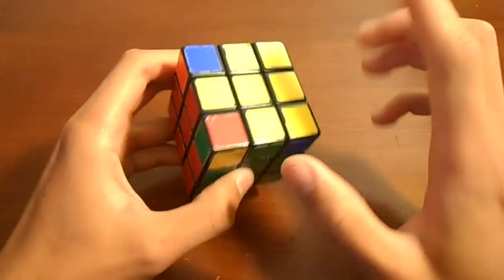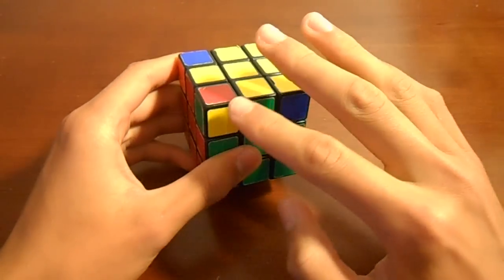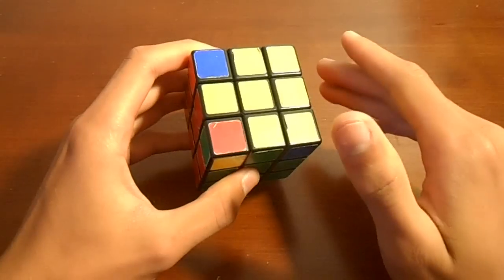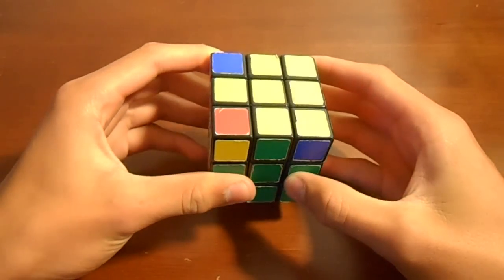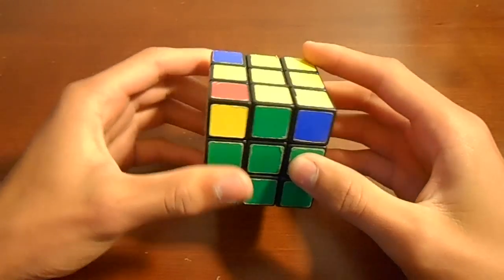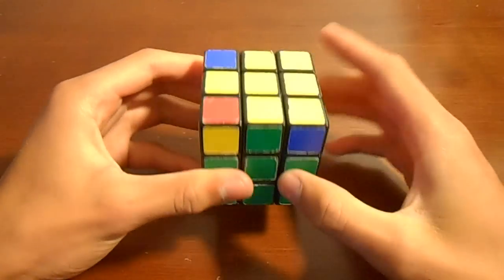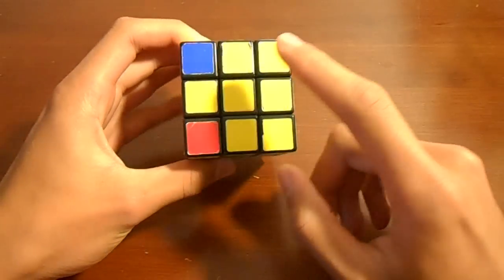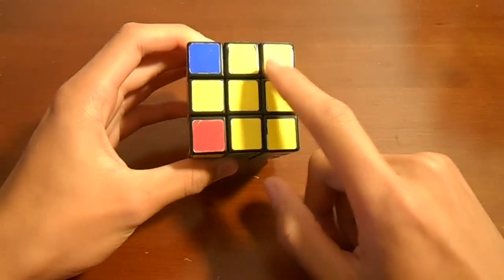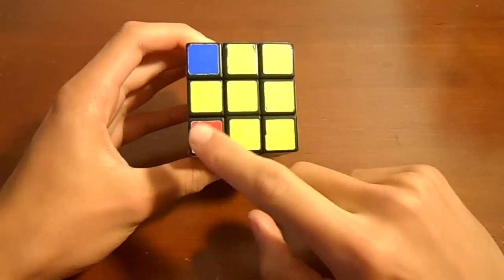So we only have one. Now the possibilities are zero of them, one of them, or all of them. So I'll go over if you have zero later. That's a pretty easy case. But if you have one for this algorithm that we're going to be learning, put it, if you're looking at the yellow side, put it in the bottom left corner right here.